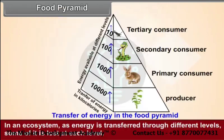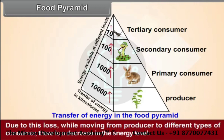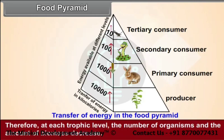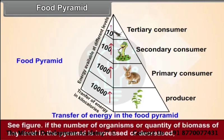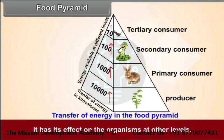Food Pyramid: In an ecosystem, as energy is transferred through different levels, some of it is lost at each level. Due to this loss, while moving from producer to different types of consumers, there is a decrease in the energy level. Therefore, at each trophic level, the number of organisms and the amount of biomass decrease. A diagrammatic representation of this process appears like a pyramid — it is called the food pyramid. If the number of organisms or quantity of biomass at any level in the pyramid is increased or decreased, it has an effect on the organisms at other levels.